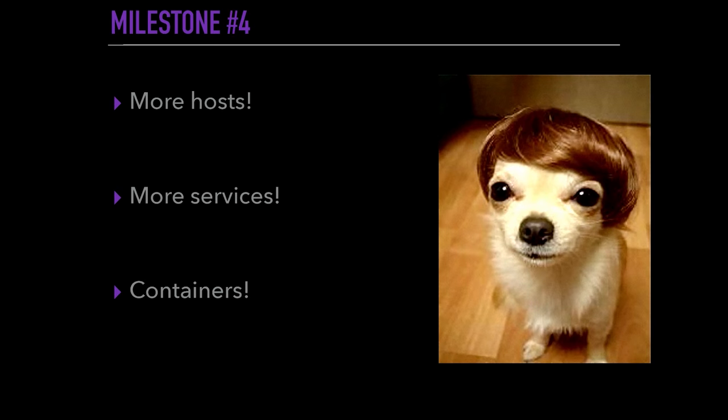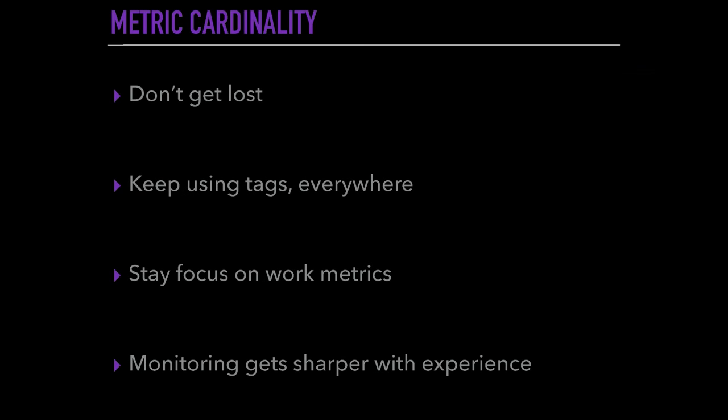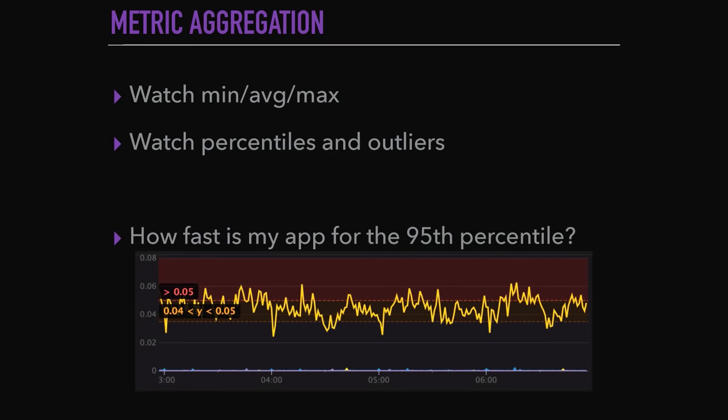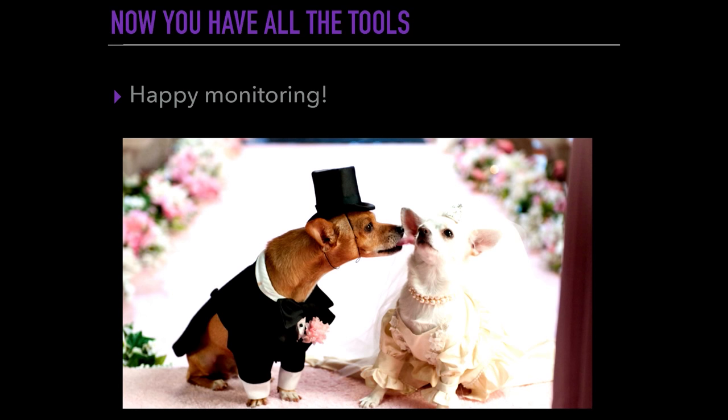Last milestone: we have more and more hosts, more and more services. So don't get lost. Keep using these tags, always having the same approach. Focus on the work metrics, and your monitoring gets sharper. By using percentiles and outliers, you can keep monitoring your system with 100,000 metrics. Thank you.